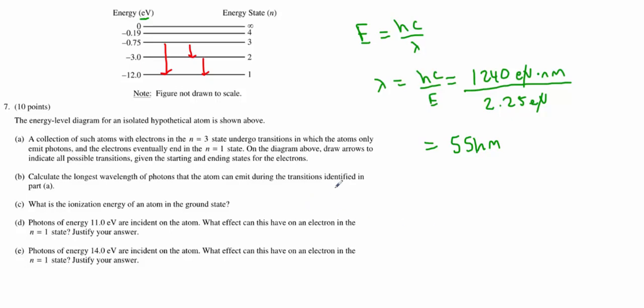Part C. What is the ionization energy of the atom in the ground state? Well, that's a nice, simple concept one. The ionization energy is the energy required to get to that infinite level. It basically means the electron is taking off, it's never coming back. So when we're in the ground state, we need 12 eV to ionize. That's the answer, 12 eV.